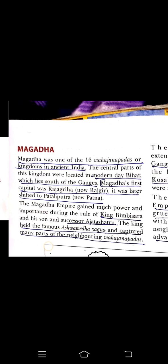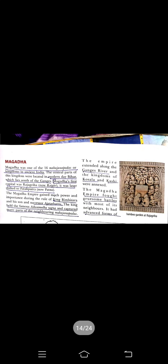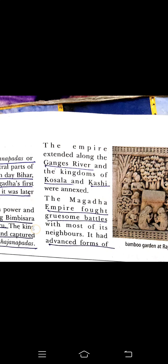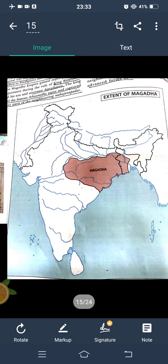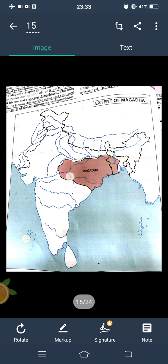King Bimbisara held the famous Ashwamedha Yagna, and captured many parts of neighboring Mahajanpadas. The empire expanded along the Ganga river, and the kingdoms of Koshala and Kashi were annexed. Magadha fought battles with its neighbors and had an advanced form of weaponry, which gave opponents very little chance against them.